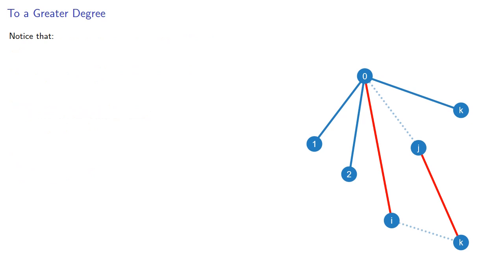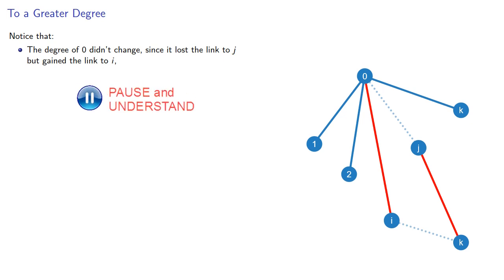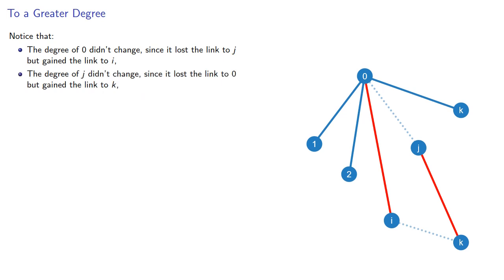So notice that the degree of vertex 0 didn't change, because it lost the link to j, but gained the link to i. The degree of vertex j didn't change, since it lost the link to 0, but it gained the link to k.